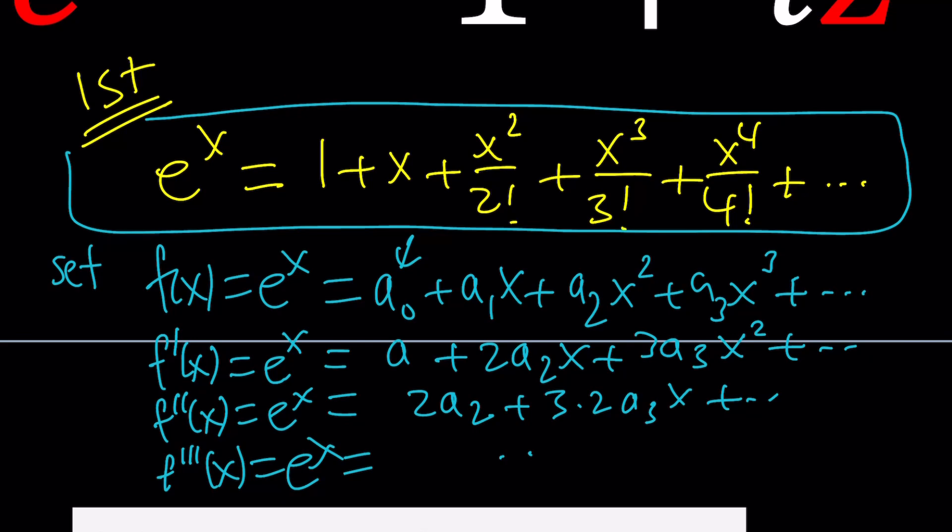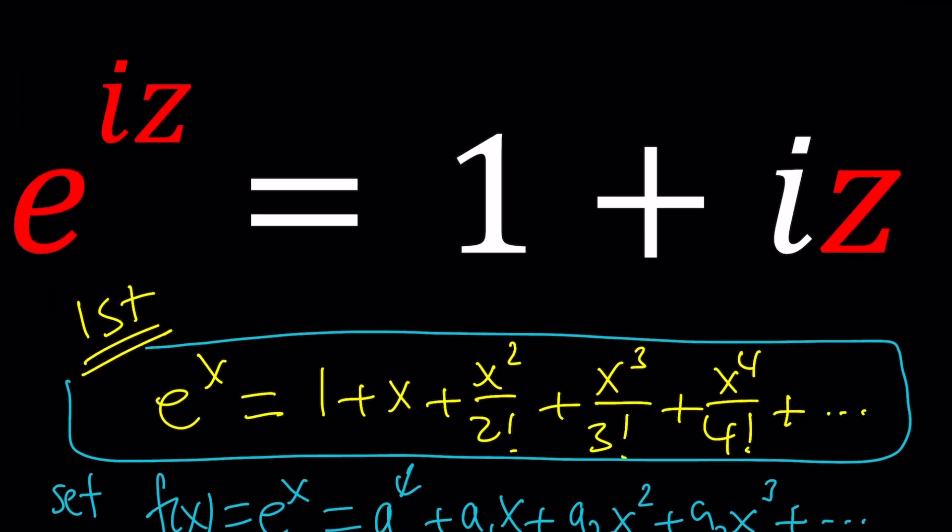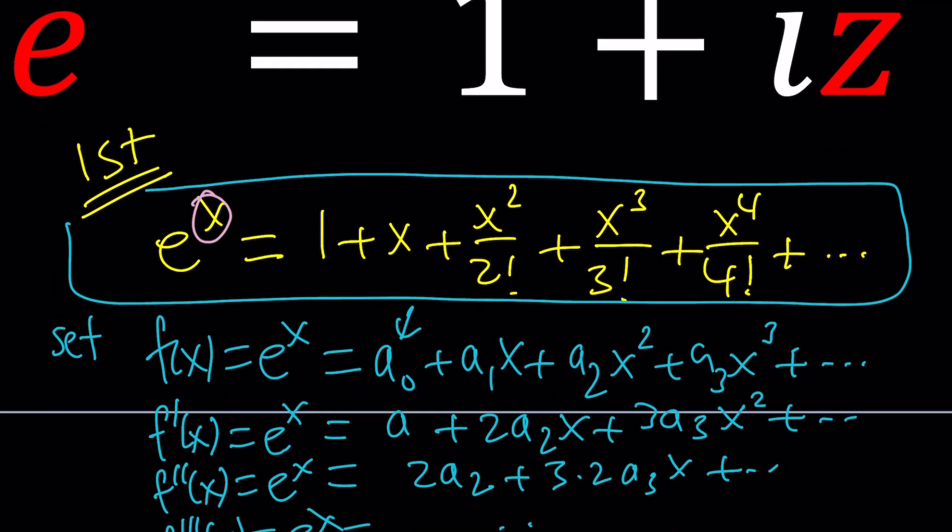And then here's the critical part. We don't want e to the x we want e to the iz right. So we're going to replace x with iz which is something you can do and by the way this converges for every x value. When you replace x with iz you're going to get 1 plus iz and then iz squared over 2 factorial, iz cubed over 3 factorial.